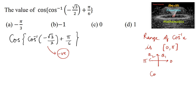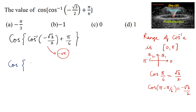We know that cos(π/6) = √3/2, and cos(π − π/6) gives −√3/2, because cosine is negative in the second quadrant. So we can write −√3/2 as cos(π − π/6).